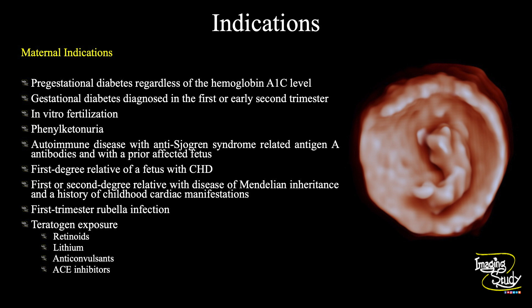The maternal indications list is very long. The first one is maternal diabetes. The second one is the presence of cardiac anomaly in the previous baby or in a first-degree relative of the fetus. If the mother has any disease that raises concern about her physical condition, or if there is any history of teratogen exposure, you should go for fetal echocardiography. Simply put, if you think this baby is at risk of cardiac abnormality, you should go for fetal echocardiography.